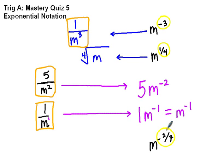I know because of the negative, I'm in the bottom of a fraction. I know because of the fraction in the exponent, I have a root. This is a seventh root, and m is being squared.